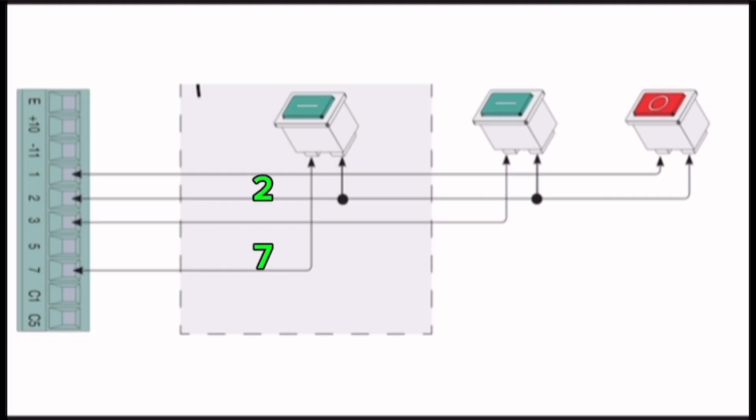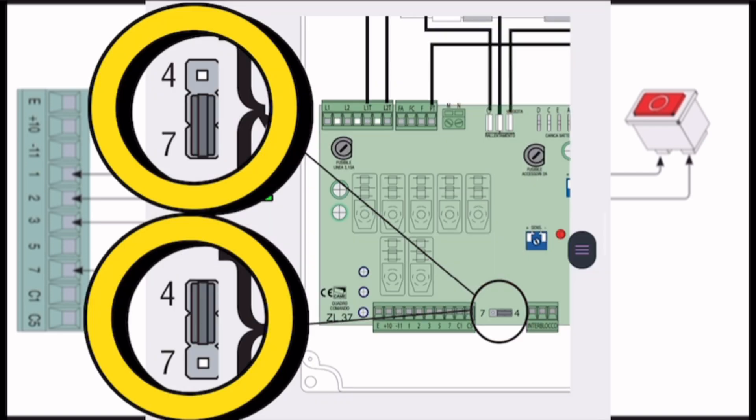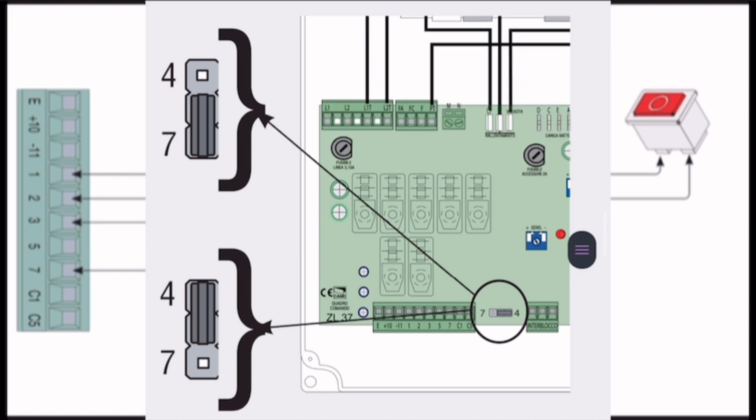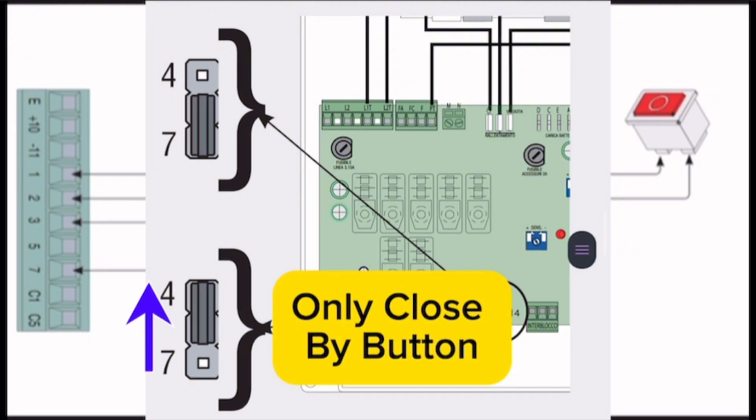Terminal 7 and 2 are NO Contact and use two different conditions. Condition 1: Open and close button. Condition 2: Just close by these two terminals. Check position of jumper between 7 and 4. If jumper near 7, this applies to open and close button. If jumper near 4, this applies to condition 1.